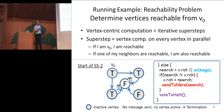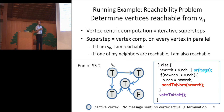This is the third super step, super step two. This vertex has these messages and updates its value to true. In this case, this vertex has no outgoing neighbors, so it doesn't send any message. Now we don't have messages and they are all in the inactive mode, so the computation terminates. This is the vertex-centric computation.